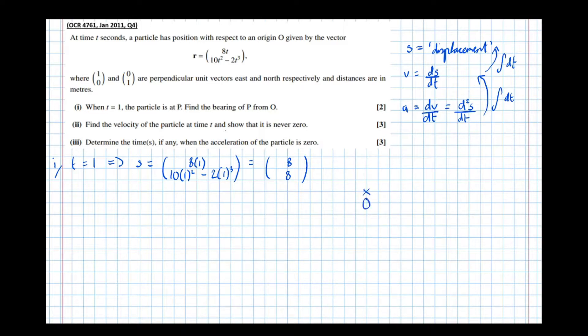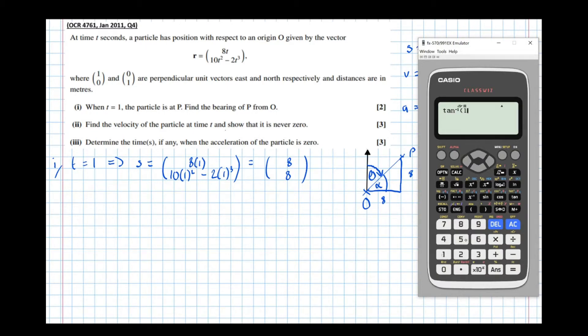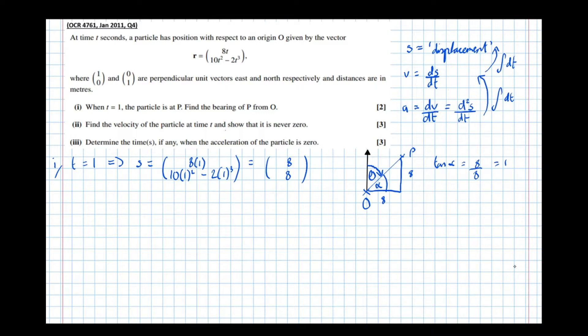We have origin O and we're traveling 8 east and 8 north to point P. Drawing a north line at O, the bearing is angle theta. Using the angle alpha in the triangle: tan(alpha) = opposite/adjacent = 8/8 = 1, so alpha = 45°. Therefore theta = 90 - 45 = 45 degrees.